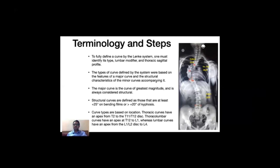The Lenke classification has three components. The first component is identifying the curve type, the second component is identifying the lumbar modifier, and the third is identifying the sagittal modifier. We will learn what these factors are in subsequent slides.